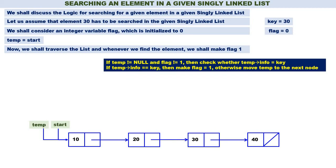How to traverse? If temp is not equal to null and flag is not equal to 1 — temp not equal to null means the linked list is not completely over, some more elements are still there. Flag not equal to 1 means the element is not yet found. If both conditions are true, then check whether temp of info is equal to key. If temp of info is equal to key, make flag equal to 1 because the element is found. Otherwise, temp is equal to temp of next — move temp to the next node.